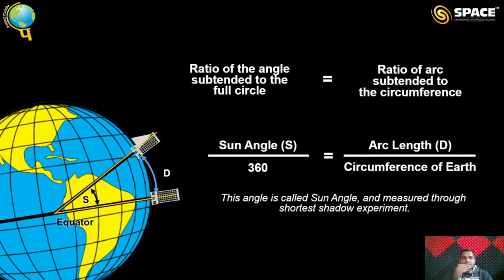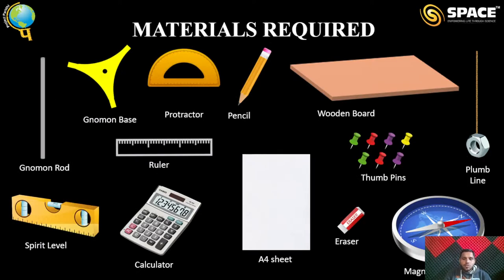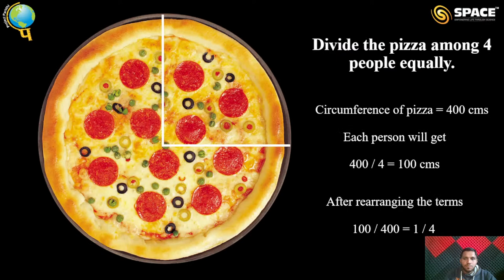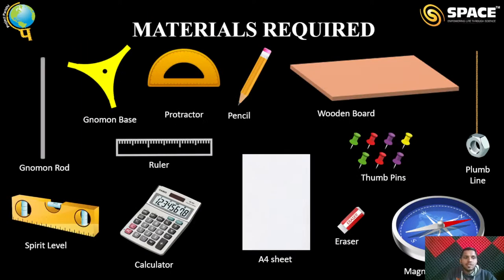To find arc length D, Eratosthenes sent camels and people to measure the distance between Syene and Alexandria. To find the sun angle, he performed the shadow experiment. The materials you need for this experiment are: a gnomon rod, gnomon base, protractor, pencil, wooden board, plumb line, spirit level, calculator, A4 sheet, eraser, and magnetic compass.